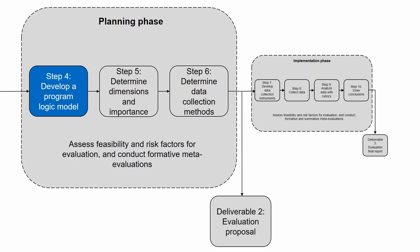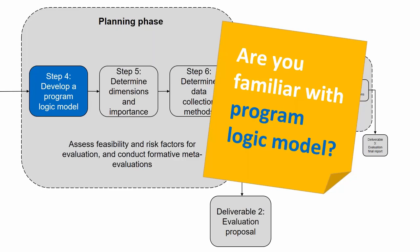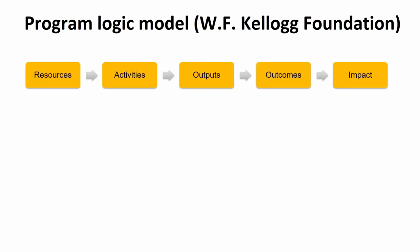Boise State University people will know about program logic models, and I hope others are familiar with them as well. If you're not, this is a really cool tool you should learn to use. There are several ways to develop a program logic model. One of them is the Kellogg Foundation approach — Kellogg is one of the leading organizations in this space, and they put out guidelines that others have adopted. According to their guidelines, you have five categories: resources, activities, outputs, outcomes, and impact. The logic behind this is the if-then logic.